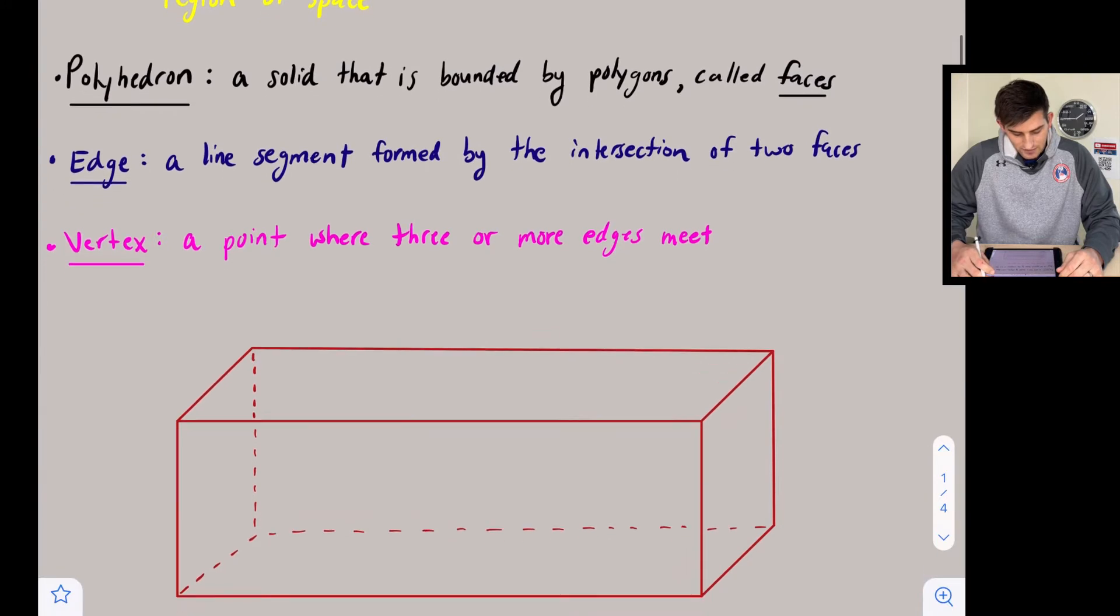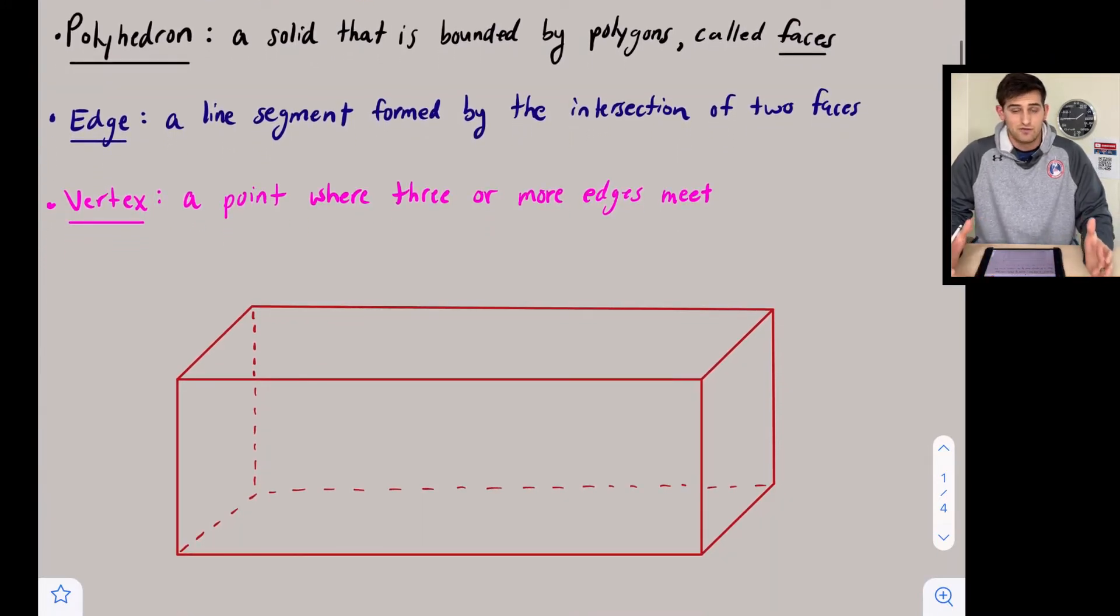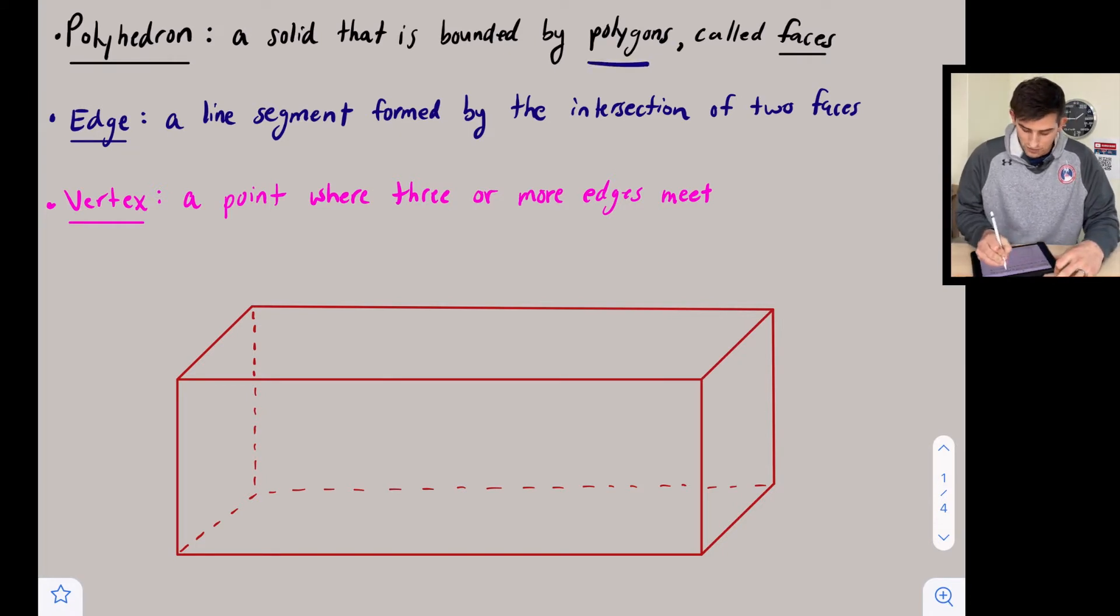Now when we think about solids, we have two types that we're going to focus on in this video: a polyhedron or not a polyhedron. A polyhedron is a solid that is bounded by polygons—the key word there is polygons. These polygons are called faces.